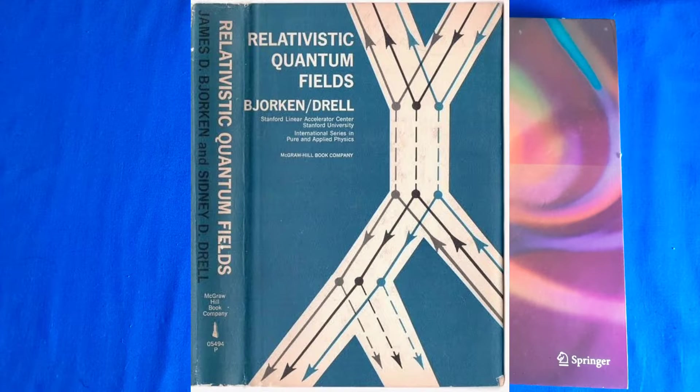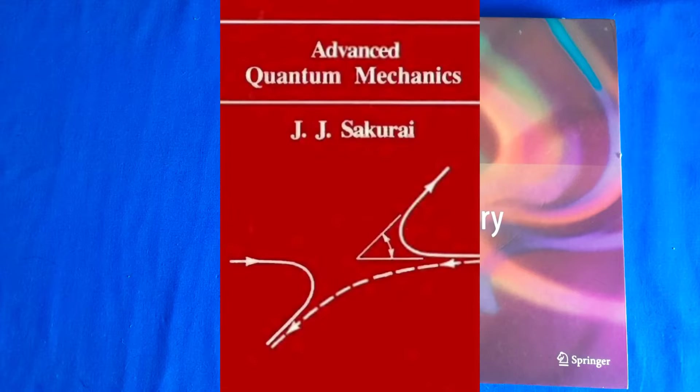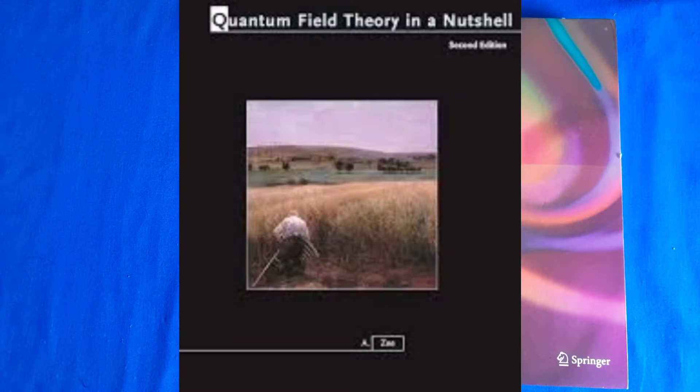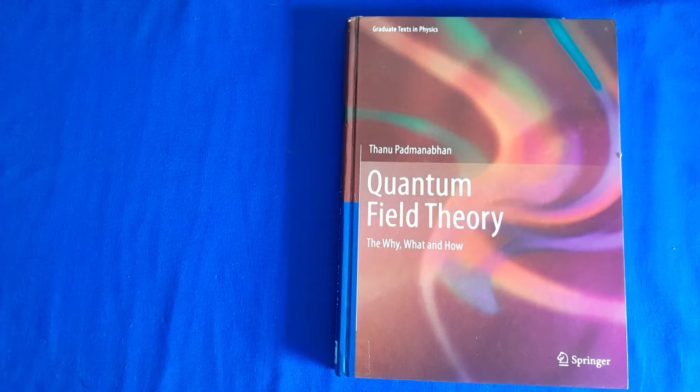There are other books. One is Bjorken and Drell, but it's a slightly older one. Another one is Advanced Quantum Mechanics by J.J. Sakurai. These are also some of the books that were used as reference books in my quantum field theory courses, and I had also used this book on Quantum Field Theory by Anthony Zee.